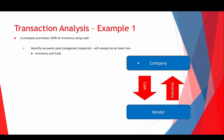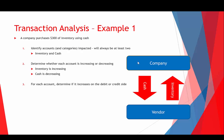Step two — determine whether each account is increasing or decreasing: inventory is going up and cash is going down. Step three — for each account, determine if it increases on the debit or credit side: inventory and cash are both assets, so assets increase on the debit side and decrease on the credit side. Therefore, we're going to debit inventory and credit cash. Step four — record the journal entry.